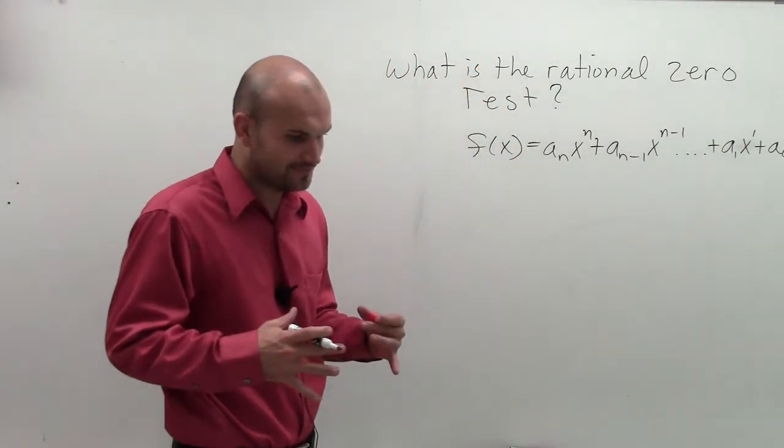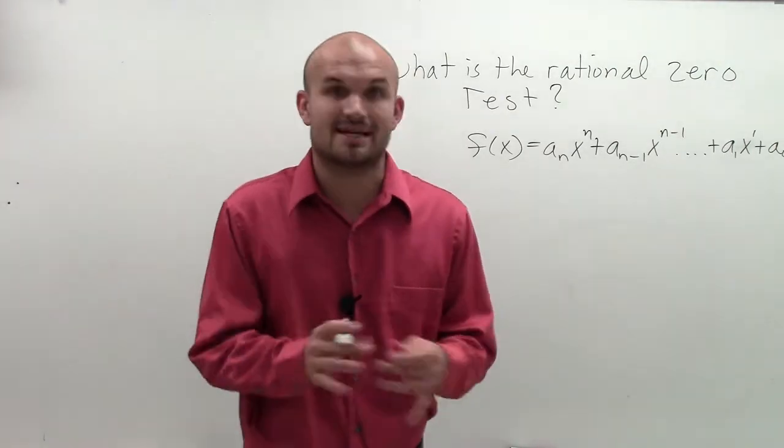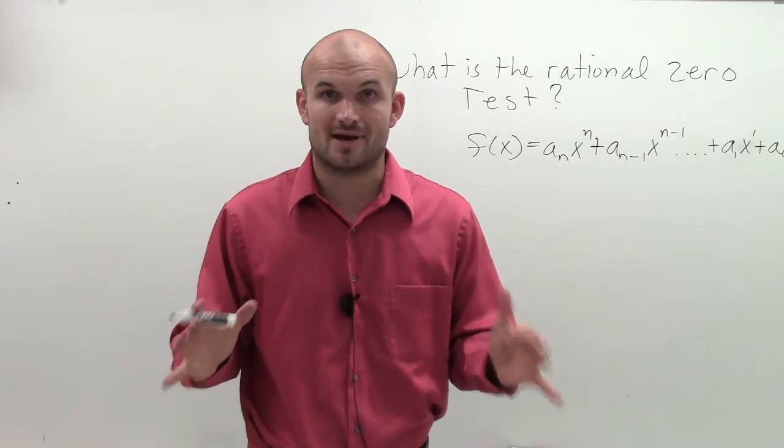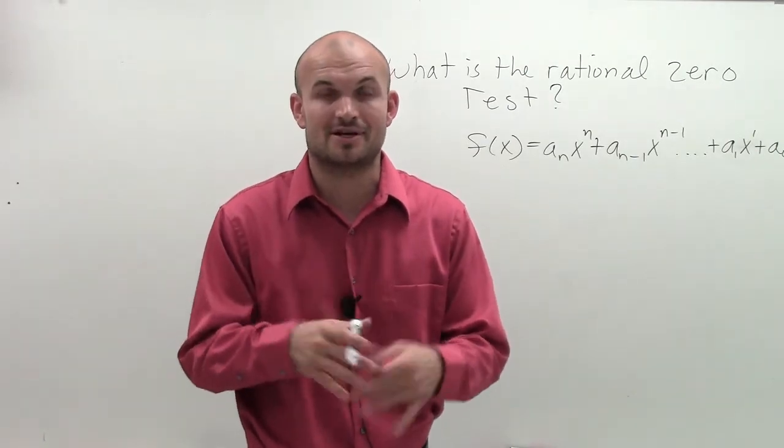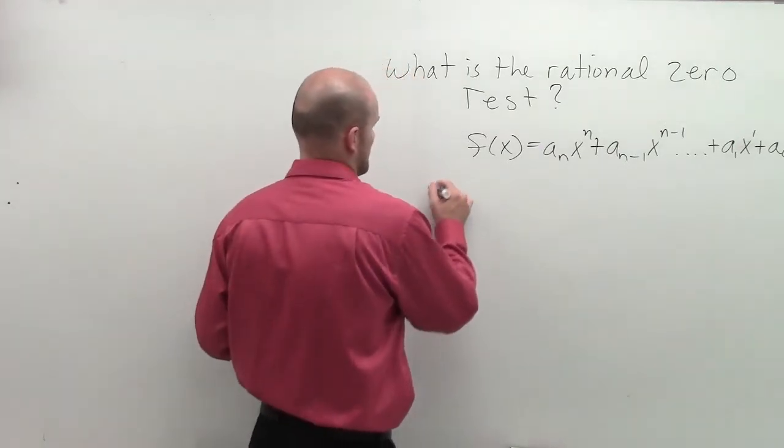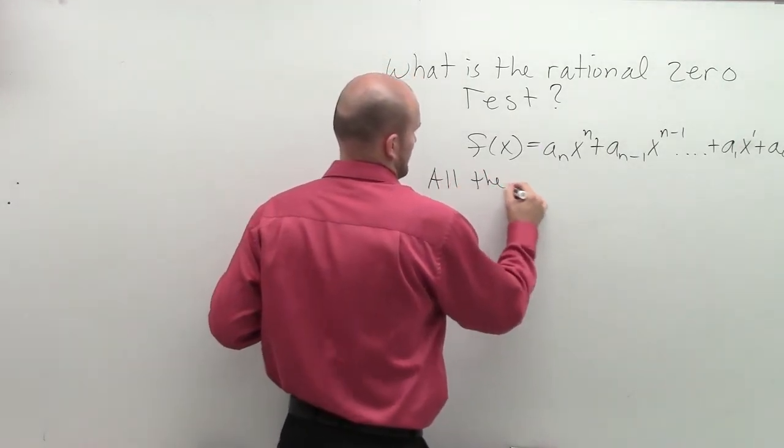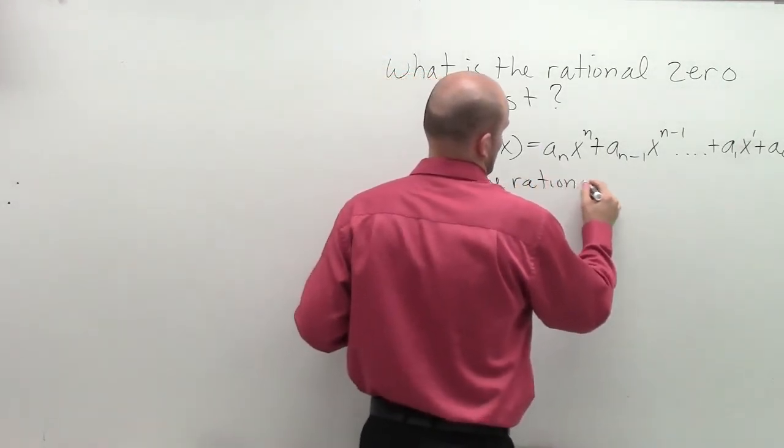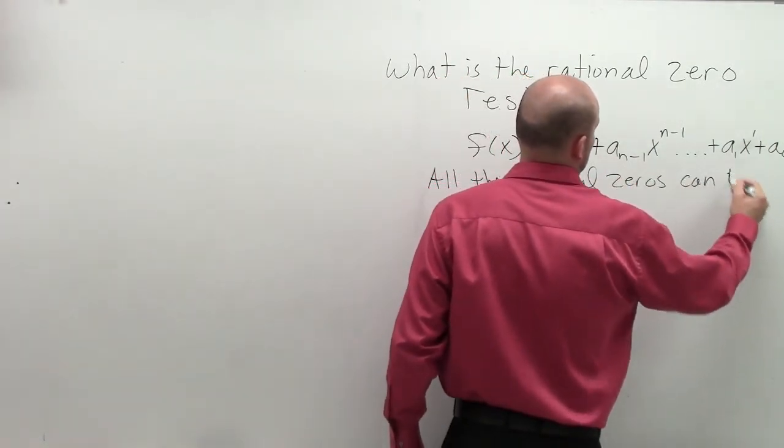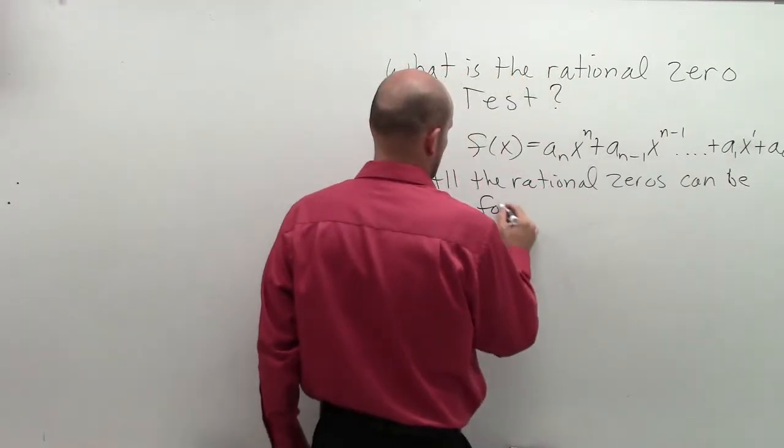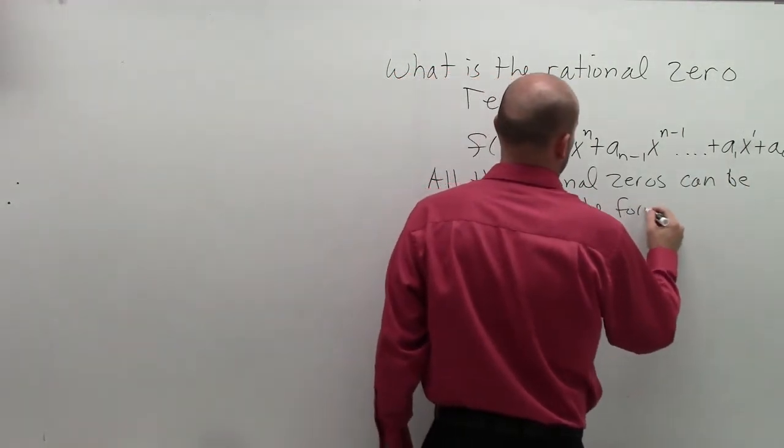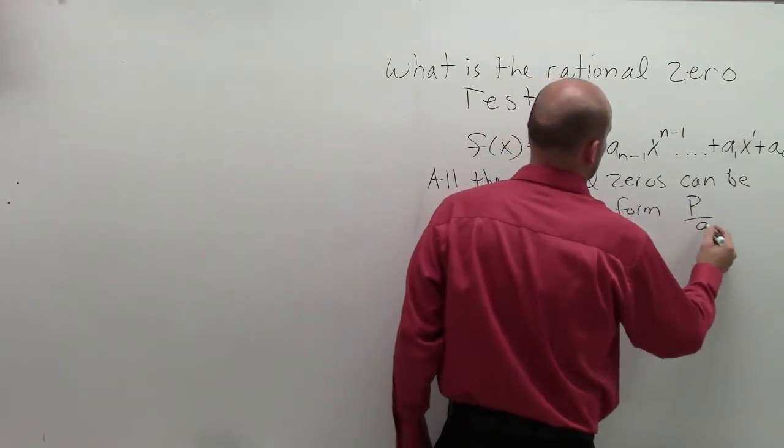So the rational zero test pretty much states that all the rational zeros - not irrational, not imaginary, rational terms - all the rational zeros can be found in the form p over q.